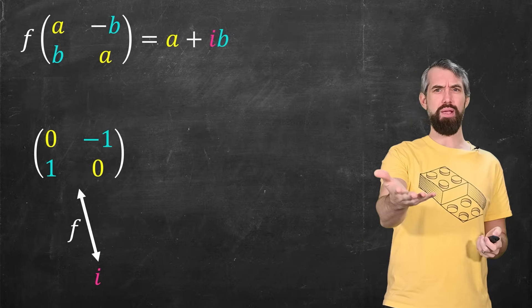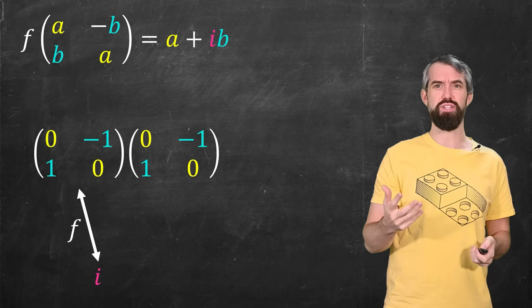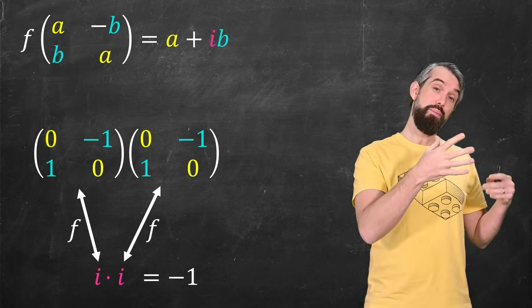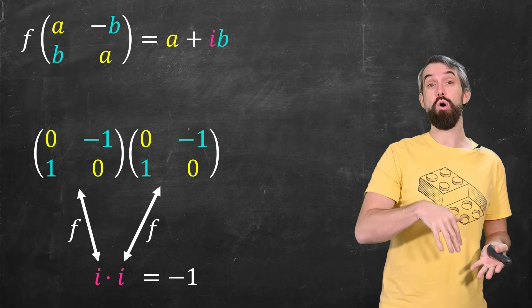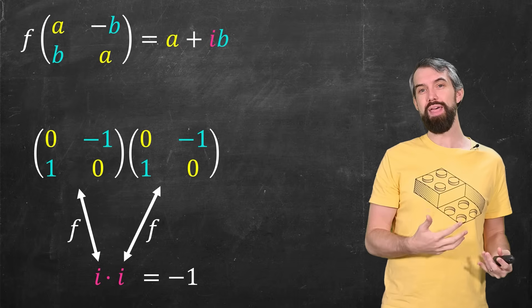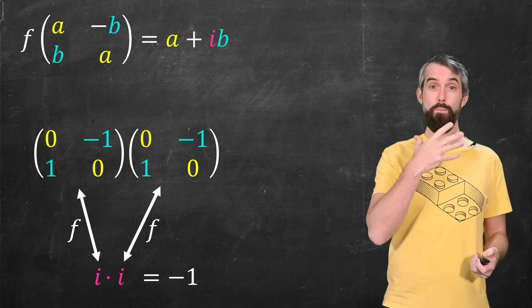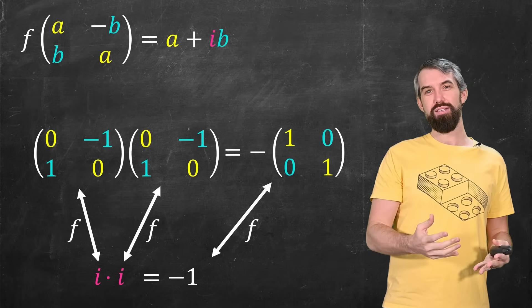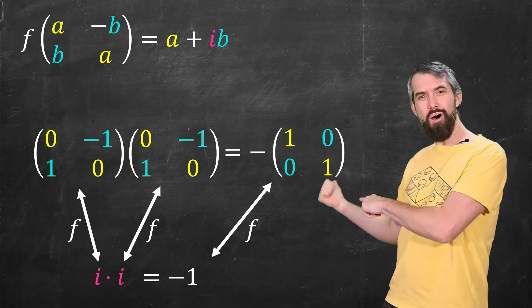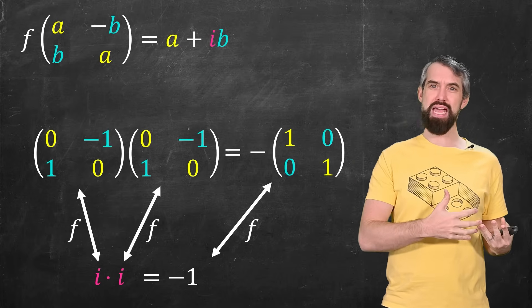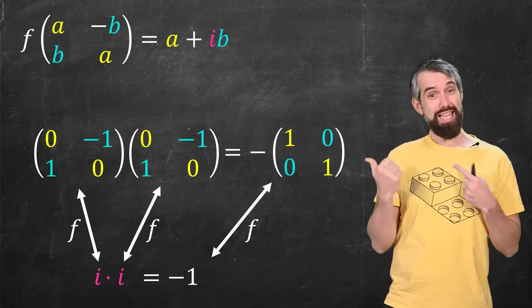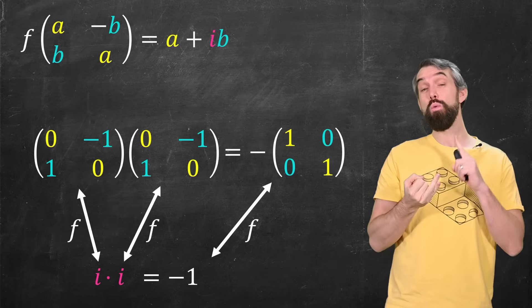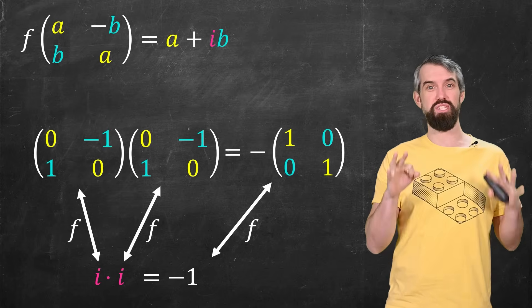If I then multiply by another matrix, 0 minus 1, 1, 0, that would be like multiplying by I again. Now as imaginary numbers, we know that I times I equals minus 1. Matrices also can multiply. I'll link down below my linear algebra playlist if you want to learn more about that. But they're going to multiply out to minus 1, 0, 0, minus 1, which sort of is the thing that maps to minus 1. So you can try to see that matrices of this type are looking a lot like complex numbers.